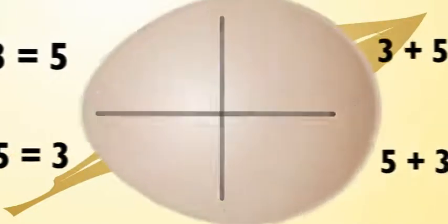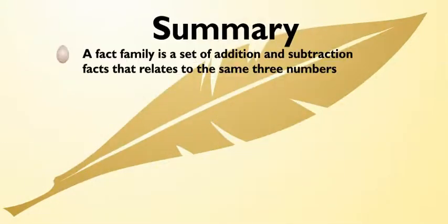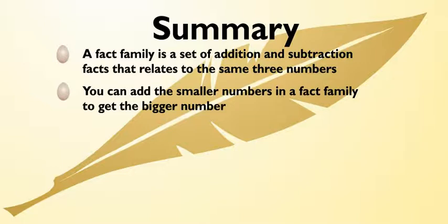You know, RJ, this addition and subtraction stuff's pretty logical. It all comes down to fact families, the sets of addition and subtraction facts that relate to any three numbers. If you know two of the numbers in a family, you can figure out the third.